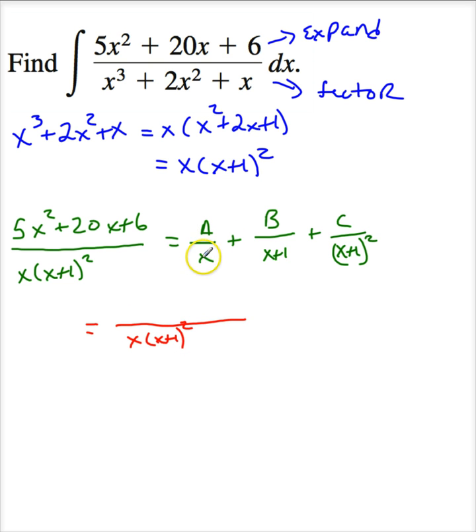Now what do I have to multiply x by to get x plus 1 squared? So of course that's going to be a times x plus 1 squared plus b times. So what do I have to multiply x plus 1 by to get x times x plus 1 squared? So this is going to be x times x plus 1 plus c. Now what do I have to multiply x plus 1 squared by to get x times x plus 1 squared? Of course that's just times x.